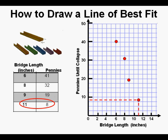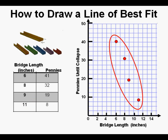What do we notice about this plotted data? Since it goes down from left to right, we determine that a negative correlation between bridge length and pennies required to collapse it. In other words, the longer the bridge span, the less weight it is able to bear or carry.